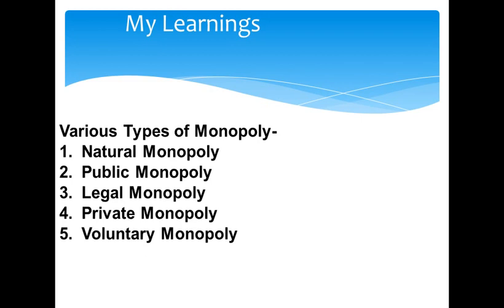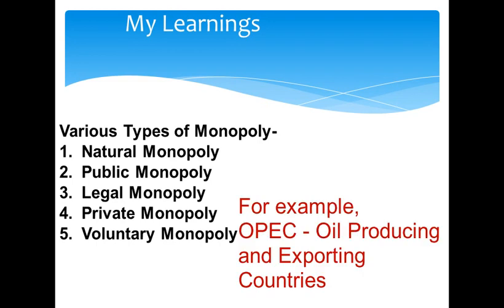Voluntary Monopoly, also known as a joint monopoly. This kind of monopoly gets created when big companies come together to form a cartel and create a monopoly by way of voluntary agreement. For example, OPEC — the association of all oil producing and exporting countries.